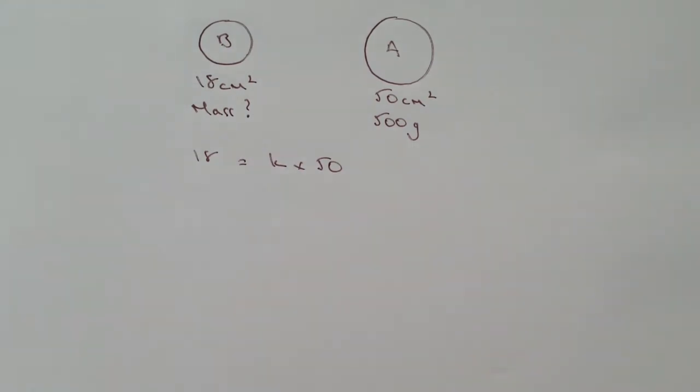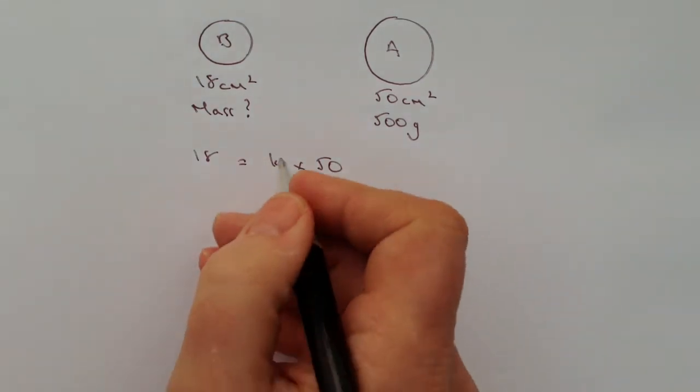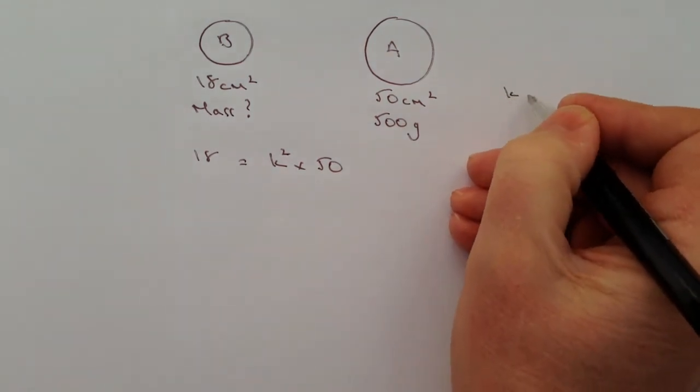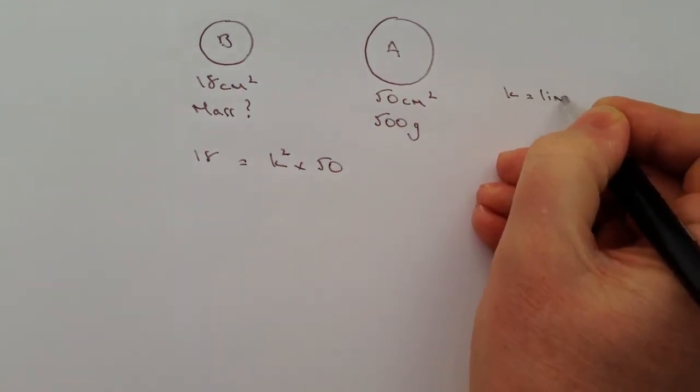Now the thing that you need to remember with this is that because we're dealing with a surface area it's a K squared calculation and that's really important because it's going to have a big impact on how you calculate these. You need to remember that K on its own is a linear relationship.